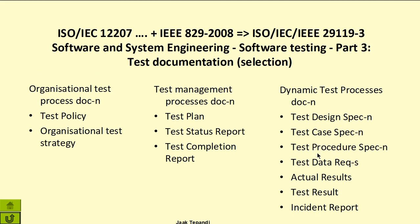As another example, the ISO/IEC 12207 standard provides a good overview of the verification and validation processes in software development. For more details on software testing, the ISO/IEC/IEEE 29119 series of standards may be used. In particular, its part 3 supersedes the popular IEEE 829 standard and provides recommendations for test documentation.